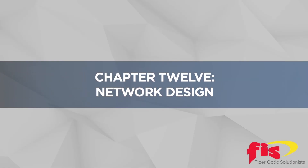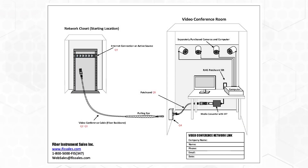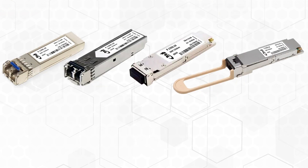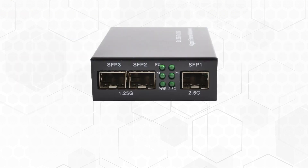Chapter 12: Network Design. Transmitting data using fiber optics is most popularly accomplished over a local area network by utilizing a 1 gigabit or 10 gigabit Ethernet protocol. Designing a network utilizing SFPs with media converters makes possible newly created networks or expansion that utilizes your existing switches.